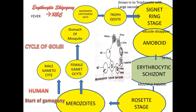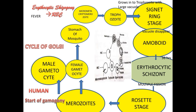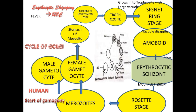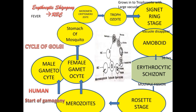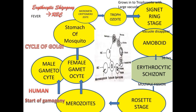The merozoites again infect the RBCs and this cycle is repeated many times, at which point fever appears. Then some merozoites change into male gametocytes and female gametocytes — this marks the start of gametogony. These gametocytes are ingested by the mosquito when it bites an infected person. This erythrocytic phase is also named the cycle of Golgi.